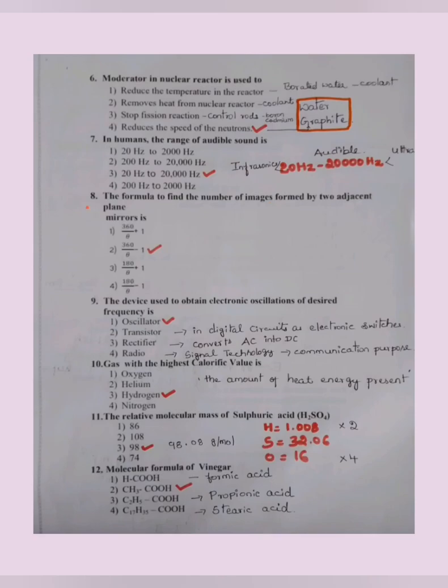The formula to find the number of images formed by two adjacent plane mirrors: Immediately when we look at this, we will come to know that something is dealing with 360 degree. If it is of 2, even it is of 360 degree, 360 divided by theta minus 1. For even, it is 360 by theta minus 1. Sometimes it is mentioned as 360 divided by theta only.